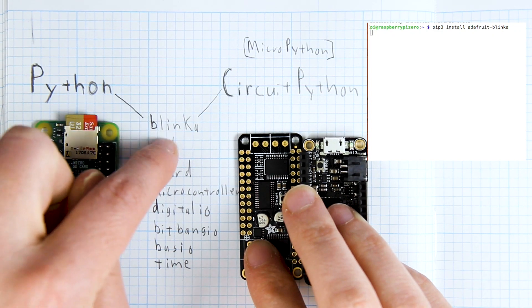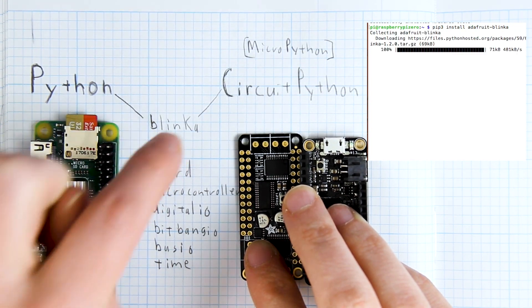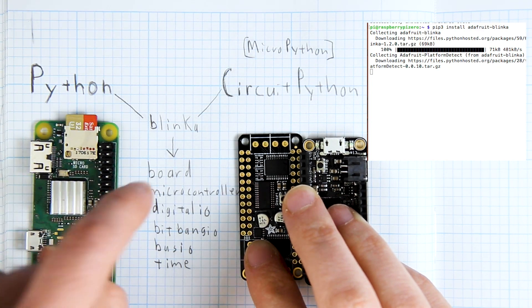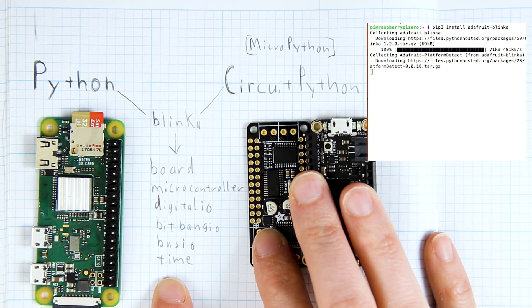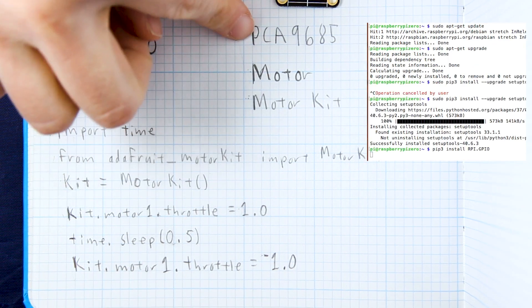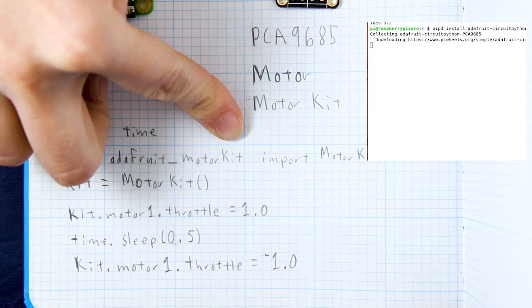The first library we're going to install is the Blinka library. And this is going to be the translation piece between CircuitPython libraries and the code that you're writing. Blinka automatically installs all of these. If you haven't done it already you should install the Raspberry Pi GPIO library.